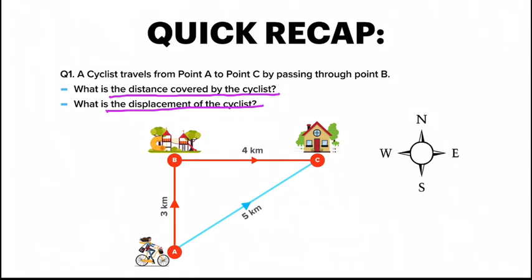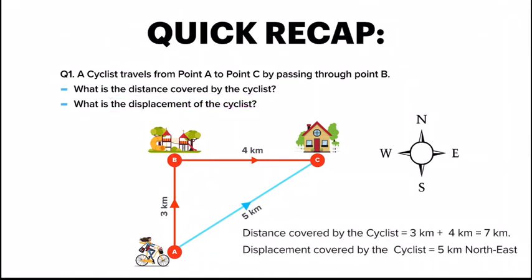Coming back, your answer will look something like this. Distance means the total movement of the object. In this question, the cyclist goes from A to B — the distance from A to B is 3 km. Then she goes from B to C — the distance there is 4 km. So total distance is 3 plus 4 km, and the final answer is 7 km.